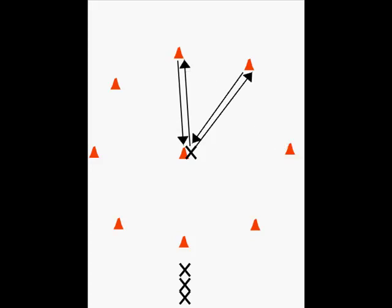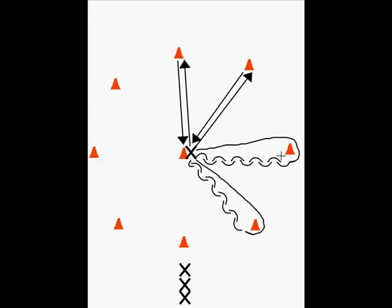the next set is to run out to the cone, around the cone, and then backwards to the middle. Again, the athlete runs every cone that way.